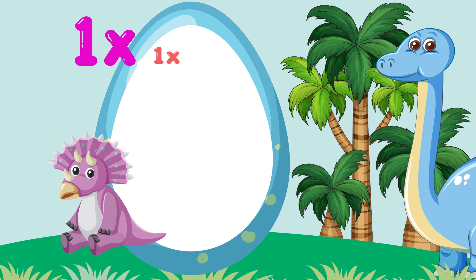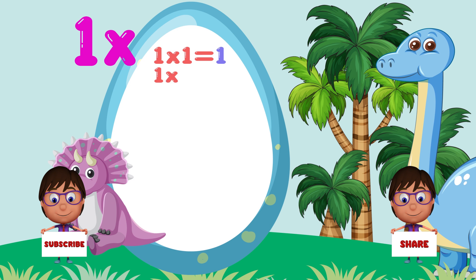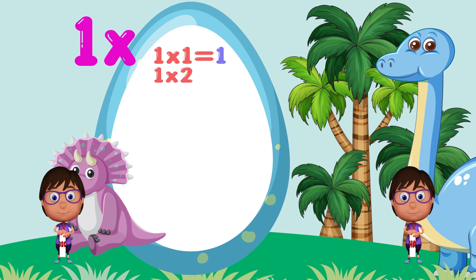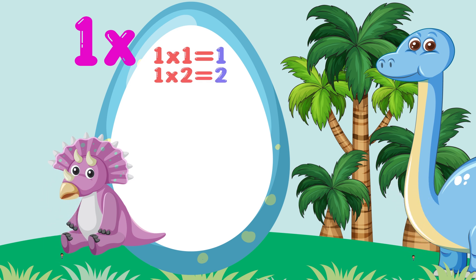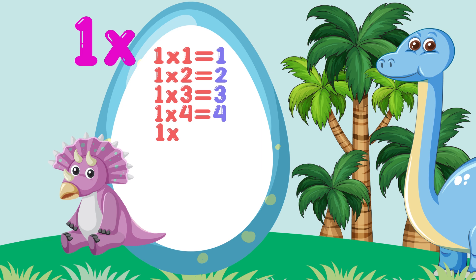1 times 1 is equal to 1. 1 times 2 is equal to 2. 1 times 3 is equal to 3. 1 times 4 is equal to 4. 1 times 5 is equal to 5.